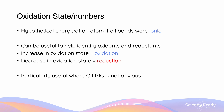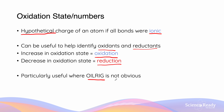The oxidation state or number is the hypothetical charge of an atom if all of its bonds were ionic — it is important to note that it is the hypothetical charge. It can be useful in helping to identify the oxidant and the reductants. When there is an increase in the oxidation state, we know that oxidation has occurred, and when there is a decrease in oxidation state, we know that reduction has occurred. That's why it's particularly useful when oil rig is not obvious, and we'll look at examples where oil rig is not obvious.